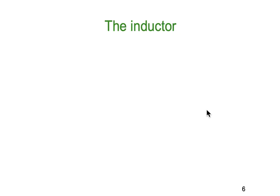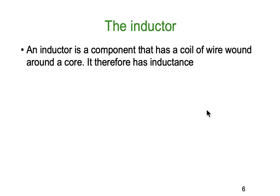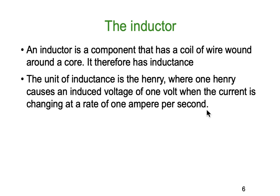An inductor is a component that has a coil of wire wound around a core of some kind, and it therefore has a property called inductance. The unit of inductance is the Henry, where one Henry causes an induced voltage of one volt when the circuit current is changing at a rate of one ampere per second. So if you have one Henry in the magnetic field and a rate of change of one amp per second, you'll get one volt.